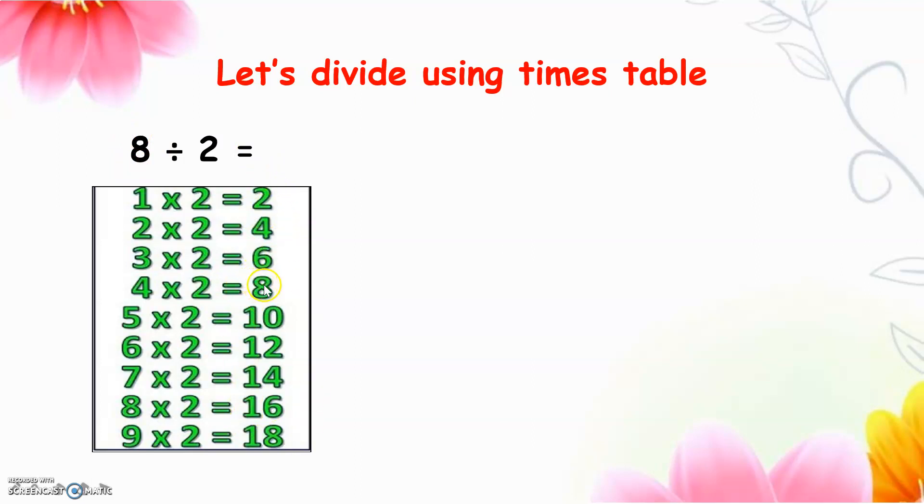Where is 8? Yes, 8 divided by 2 equals to 4. The answer will be 4. If we times 4 times 2 equals to 8, 8 divided by 2 equals to 4.